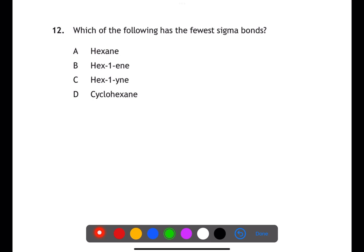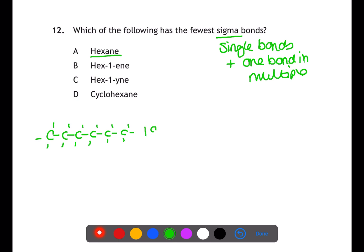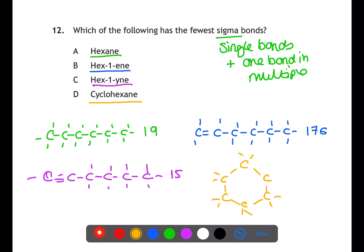Question 12 is looking at the bonding in hydrocarbons. We're looking for the substance with the fewest sigma bonds. Sigma bonds are all single bonds and also one of the bonds within a multiple bond. In hexane we have C6H14. All of the bonds within hexane are sigma bonds. This means that we have 19 sigma bonds. For hex-1-ene we have C6H12 with one pi bond and 17 sigma bonds. In hex-1-yne we have C6H10 with two pi bonds and 15 sigma bonds. In cyclohexane we have C6H12 with 18 sigma bonds. Therefore hex-1-yne has the fewest sigma bonds.